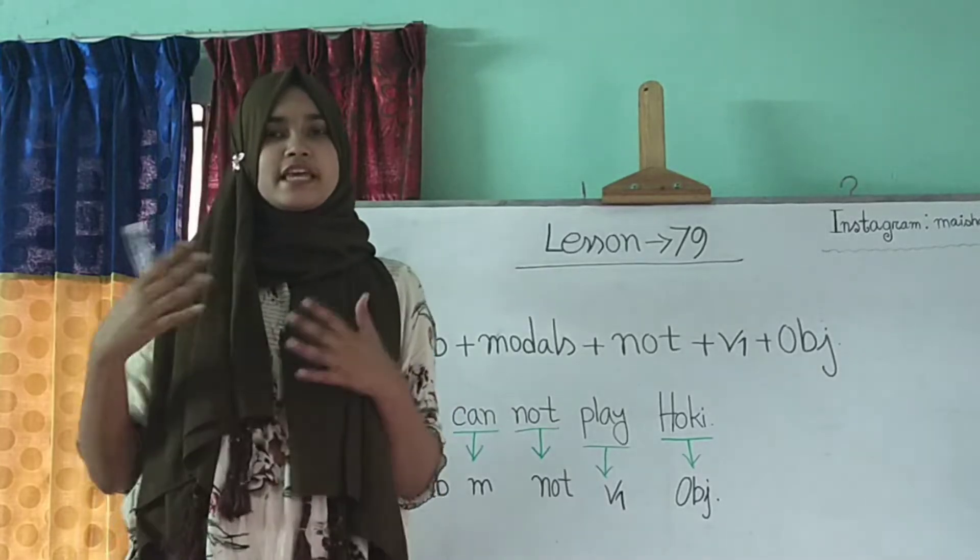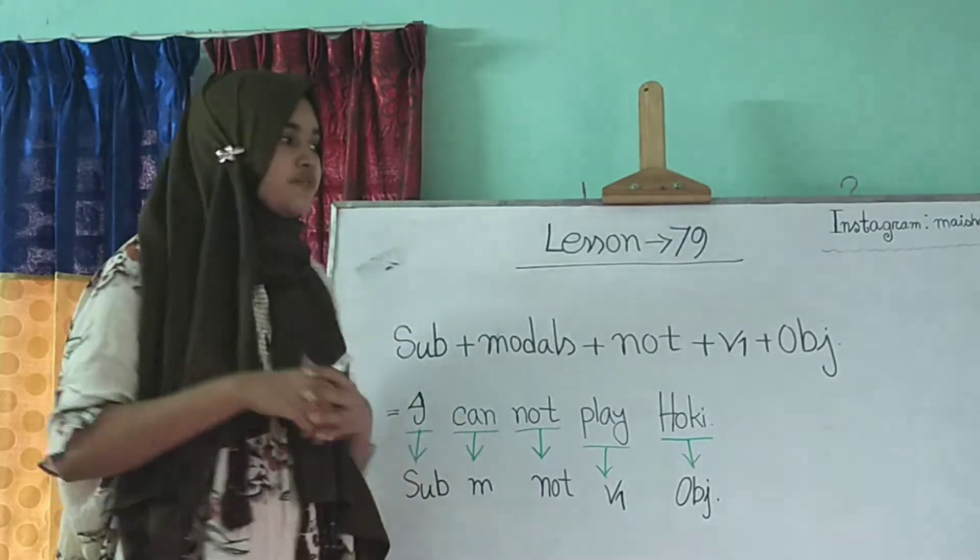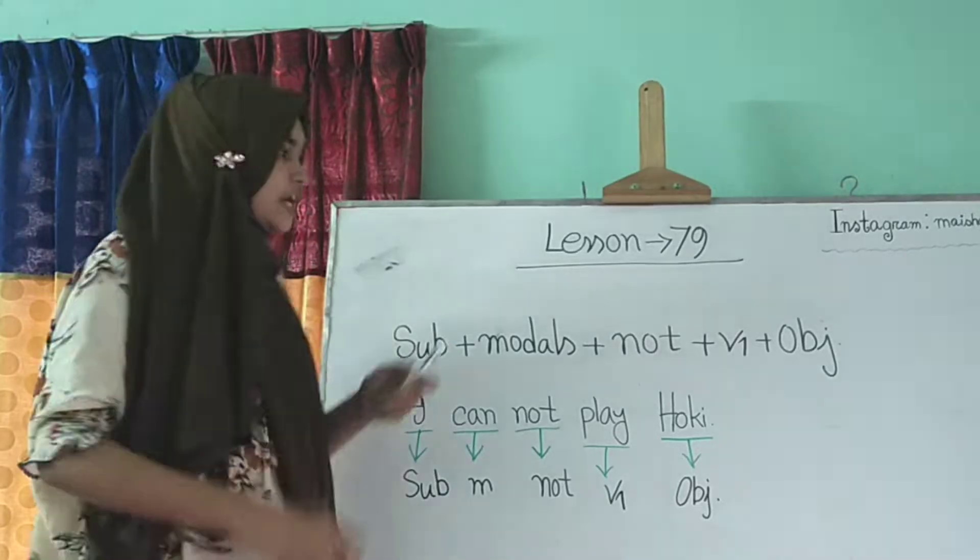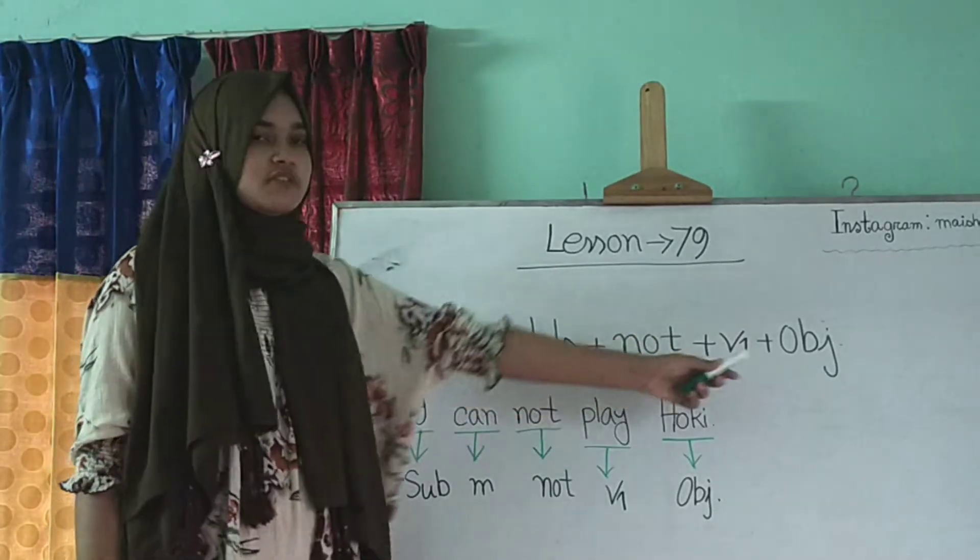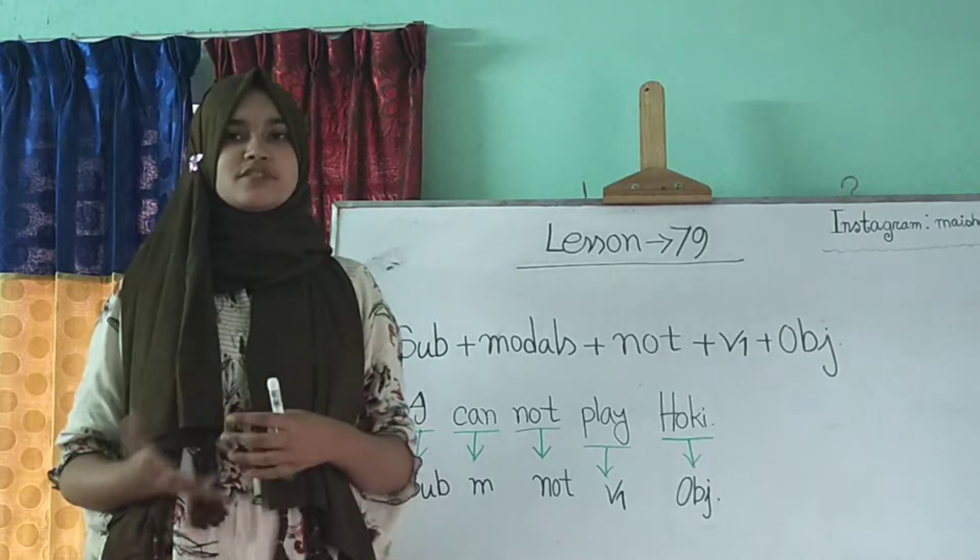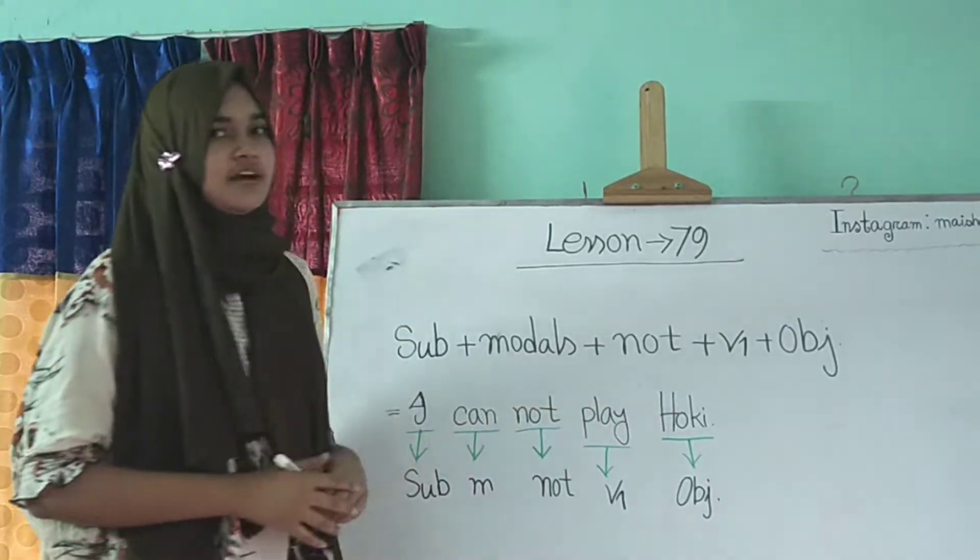We all know that for negative sentence making we have to use not for expressing the negative one. So subject models not verb one and then verb one means verbs based form or the present form and then object.